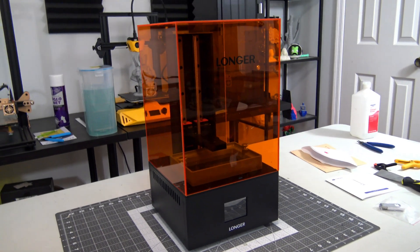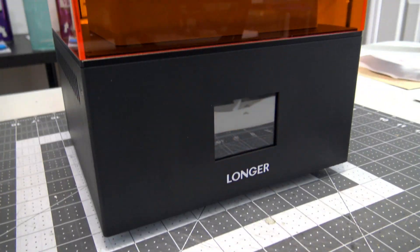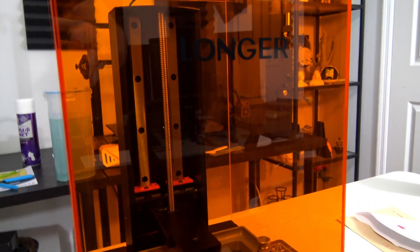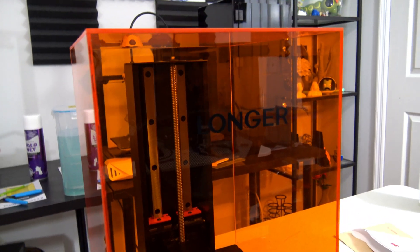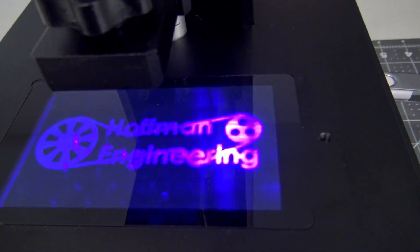The Longer Orange 4K is a resin-based LCD stereolithography 3D printer. One of the key specs for an LCD SLA printer is its pixel size. The size of the pixel determines how accurately the printer can cure the resin. The smaller the pixel size, the more detailed the prints can be. It's time to get technical.